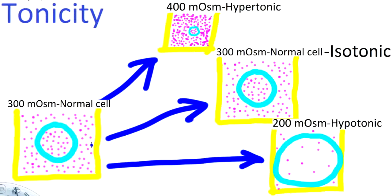In this video I'm going to talk about whether or not a cell is going to shrink or swell depending on what type of solution it's placed into. Tonicity is the effect of solution concentration on the osmosis of water — that's just the movement of water in or out of the cell.